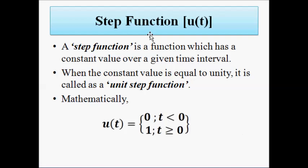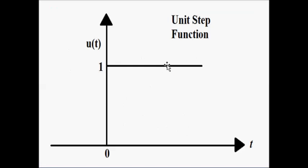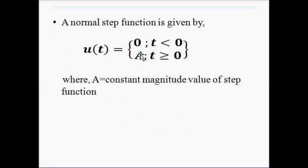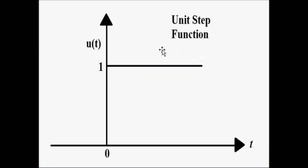Next we have the step function. The step function has a constant value over a given time interval. It has a constant value for t greater than 0 and is non-existent for t less than 0. The step function u(t) is defined as 0 for t less than 0 and equal to 1 for t greater than or equal to 0. This is a unit step function since the amplitude of the step signal equals 1.